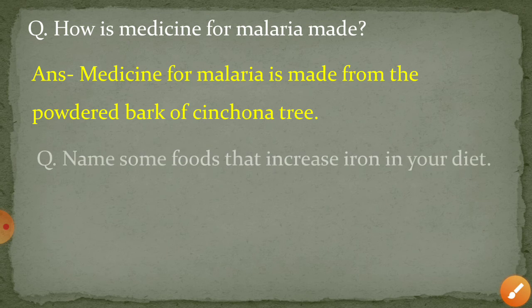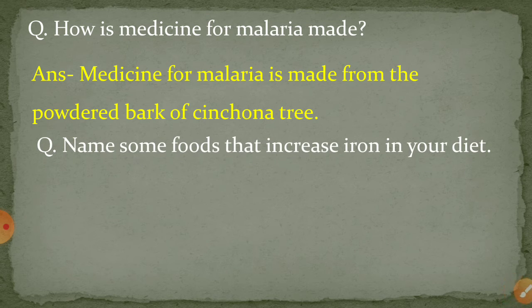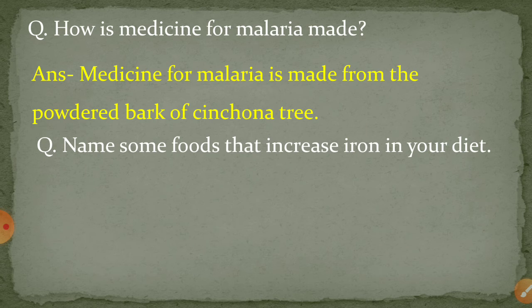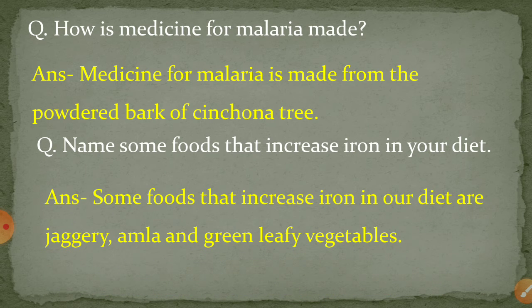Name some foods that increase iron in your diet. Some foods that increase iron in our diet are jaggery, amla, and green leafy vegetables — yaani amla aur harit pattedar sabziyaan jo hain woh humaare blood mein iron badhati hain.